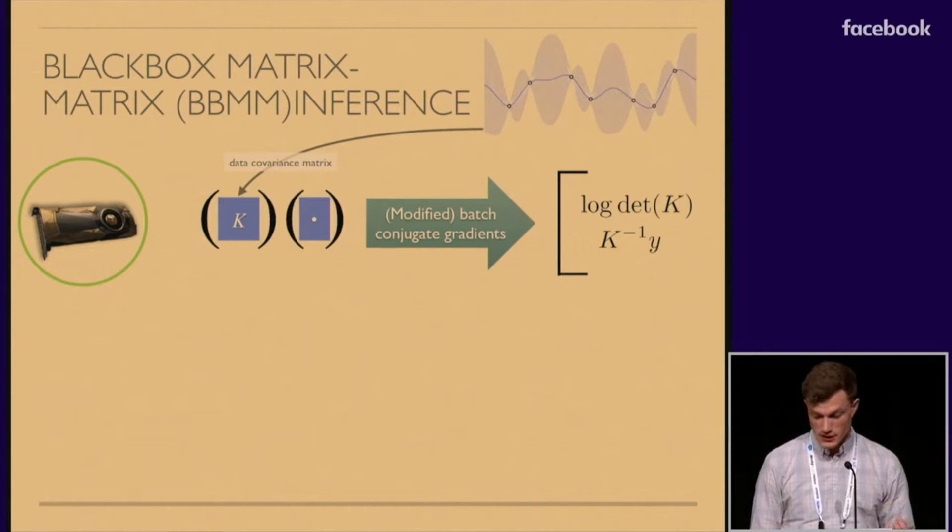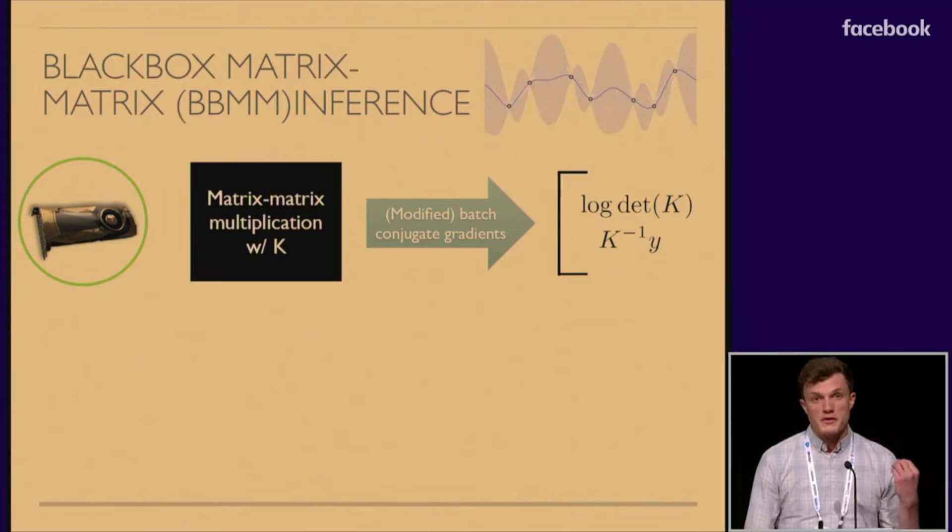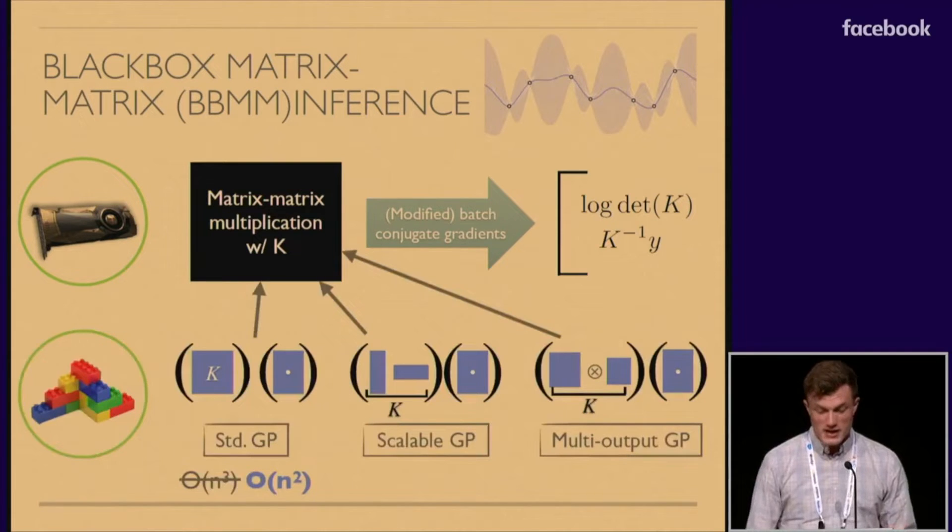There's another key advantage of this framework. This can be easily extended to a lot of the more complex GP models that I was talking about simply by changing the matrix multiplication routine that you use with conjugate gradients. Scalable GP methods, multi-output GPs, and a lot of other models can be implemented simply by using a matrix multiplication routine that takes advantage of the structure that you have in the kernel. And this makes things really easy to implement and also is still fairly fast. This doesn't actually sacrifice any speed from any of these specialty inference algorithms, and it even reduces the computational complexity of the exact GPs to quadratic.